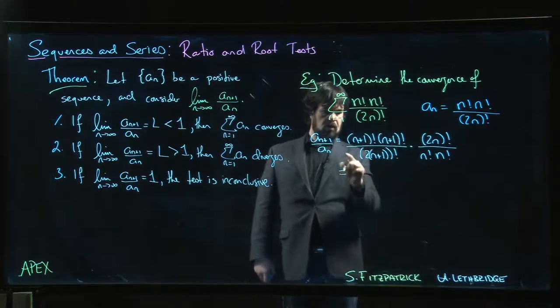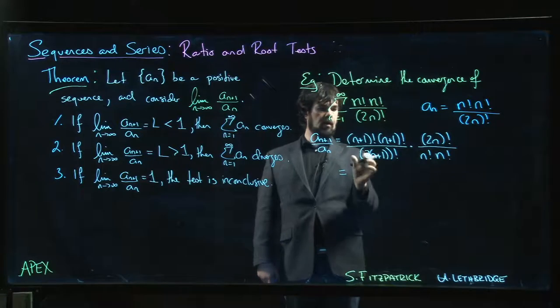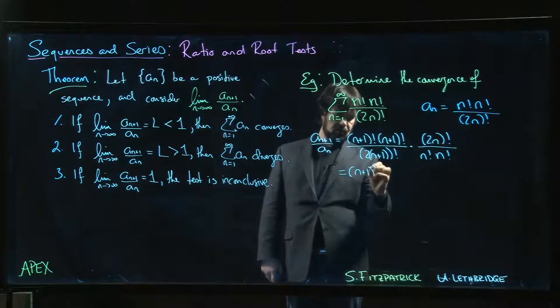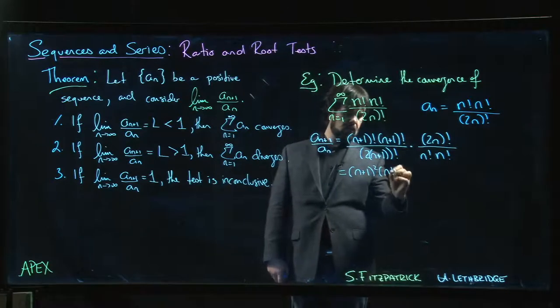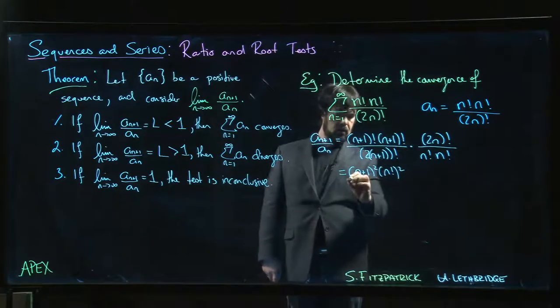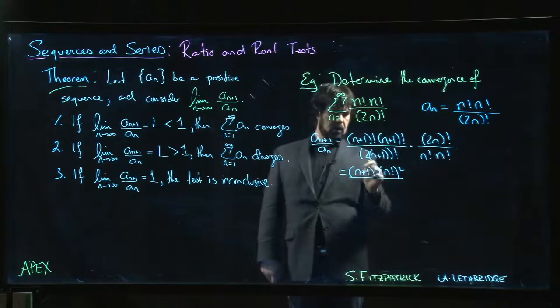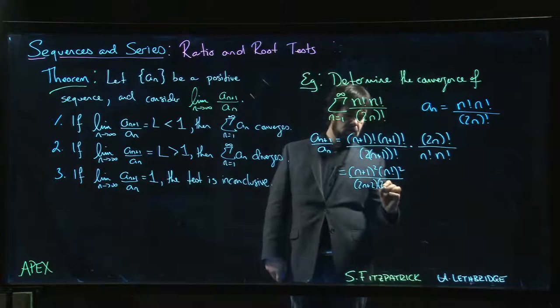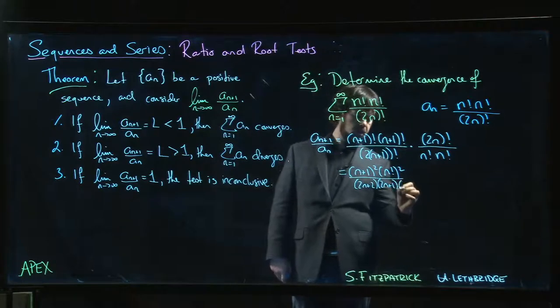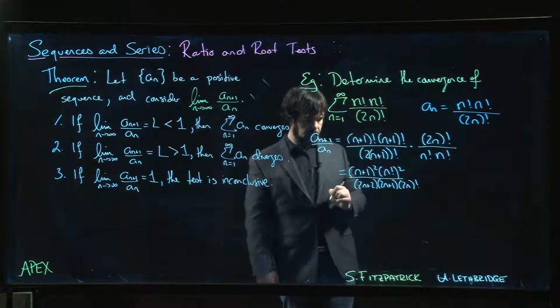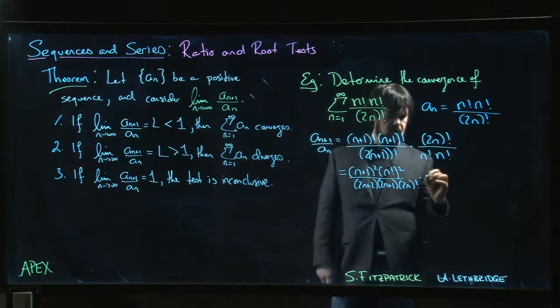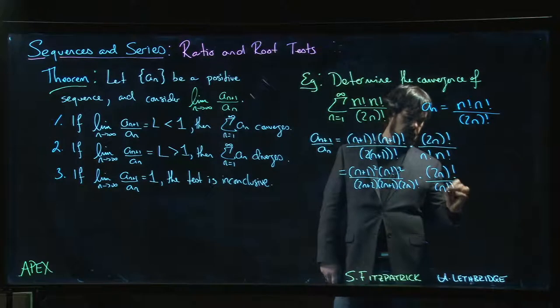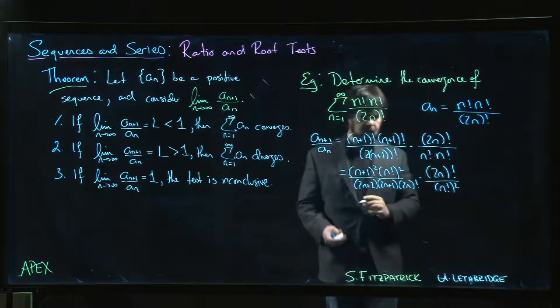So remember now that n plus 1 factorial we can write as n plus 1 times n factorial. We do that twice. So n plus 1 squared, n factorial squared. On the bottom, this is 2n plus 2, so it's 2n plus 2 times 2n plus 1 times 2n factorial. Okay. Then we have 2n factorial n factorial squared, if we want to write it like that.